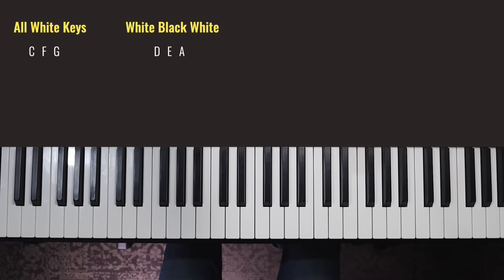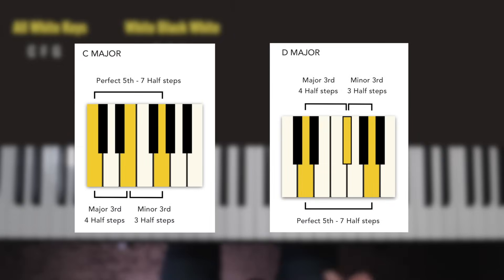And just as a reminder, whilst these shapes appear different on the keyboard, the spacing between the notes is identical even though the chords look like a different shape. If you count the amount of half steps between these chords, you'll see what I mean. That's why they're the same type of chord.